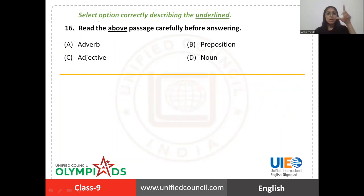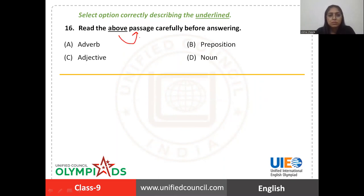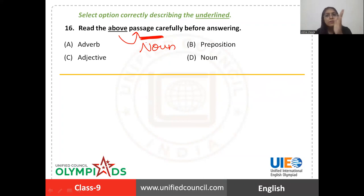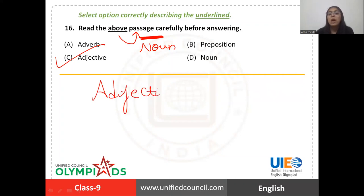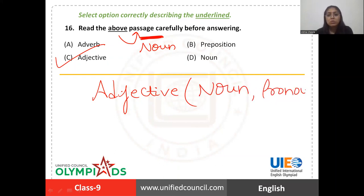In question number sixteen, you have to tell the part of speech of the underlined word 'above' in the sentence 'Read the above passage.' It will depend on the word it is qualifying. 'Passage' is a noun. Which passage? The 'above' passage. So 'above' is qualifying this noun 'passage'. Words which qualify a noun or a pronoun are called adjectives. In this case 'above' is qualifying the noun 'passage', so it is an adjective. The right answer is option C.